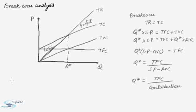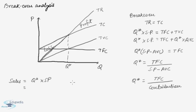If we have to find out the break-even sales then we just have to multiply the break-even quantity by the selling price. So this is the sales revenue at break-even quantity. We can also calculate the amount of quantity produced for a certain profit — we just have to reframe the equation.